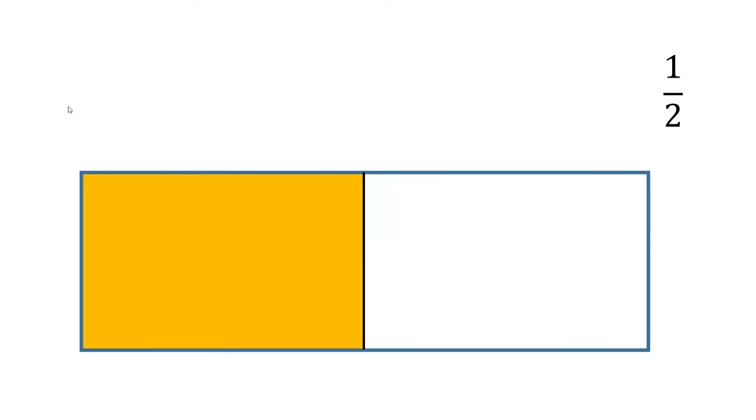Imagine we have this rectangle and we wanted to find half of that rectangle. To find half of something, we simply cut it into two equally sized pieces. If we were interested in one half, we simply need to look at one of those two pieces — that's one out of two pieces to find half of something.